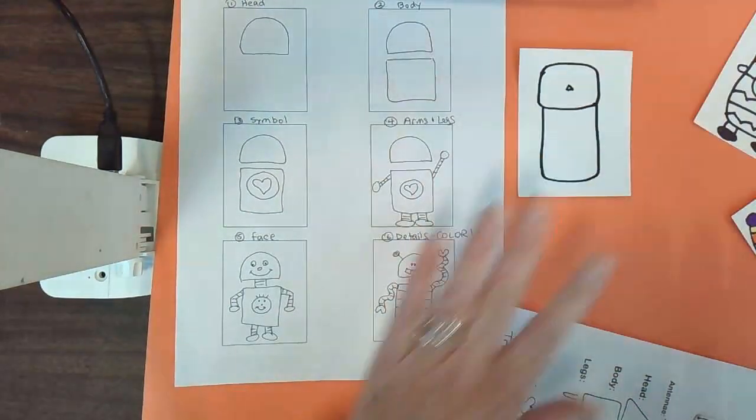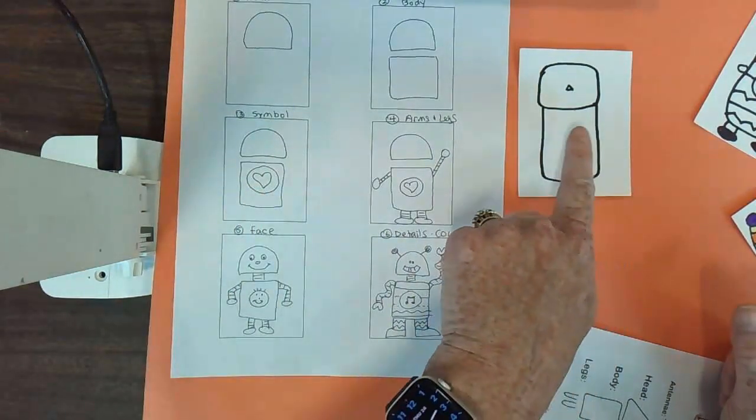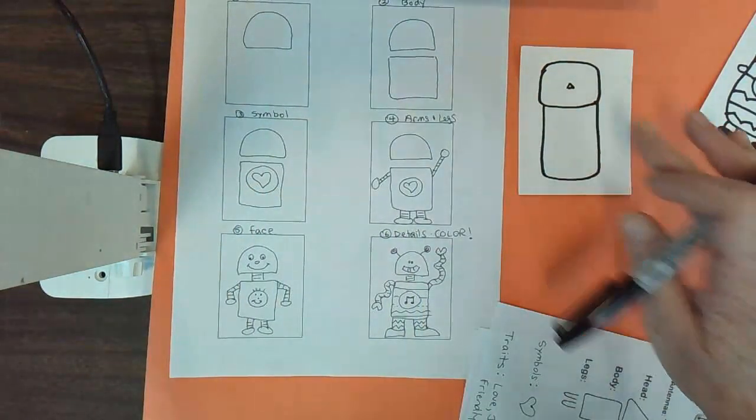You could add, let's see what it says to add a head and a body. Next, you want to think about the symbol you want on the body of your robot.